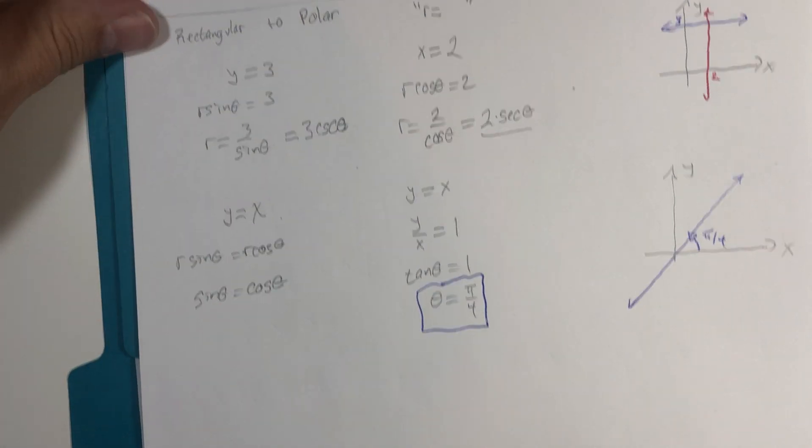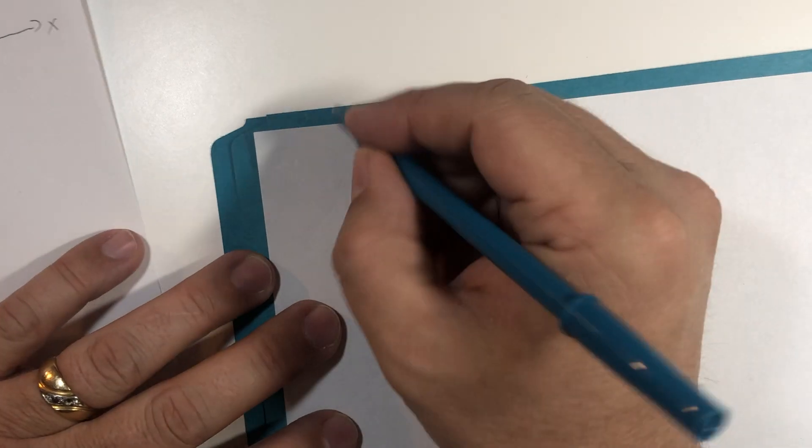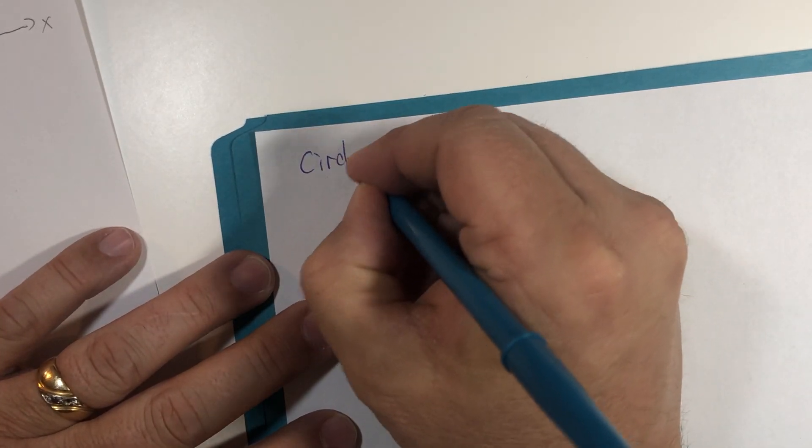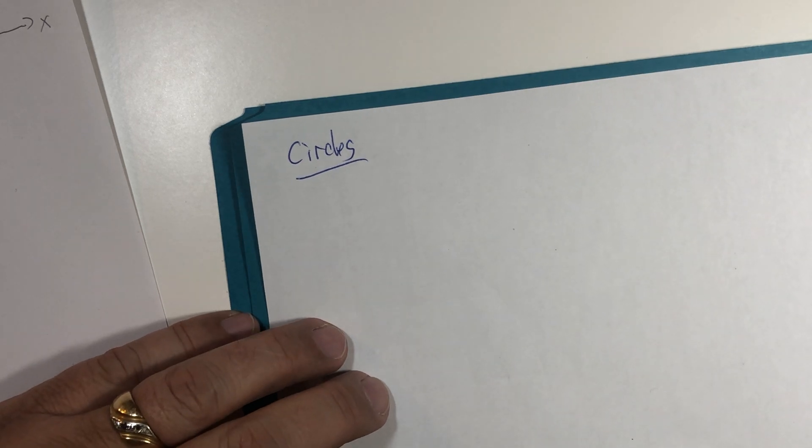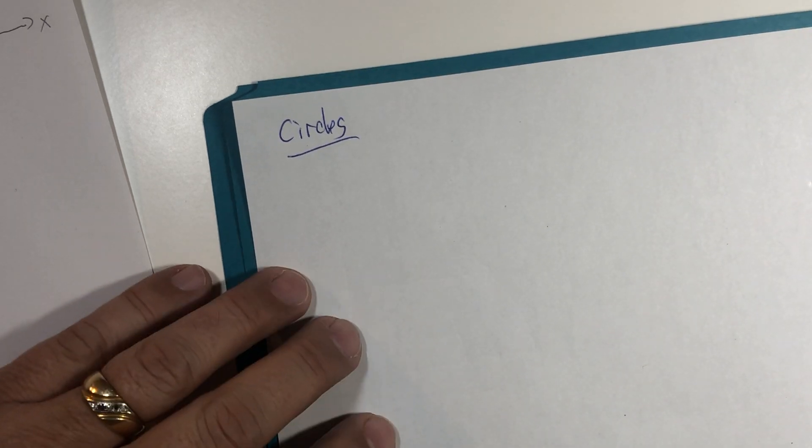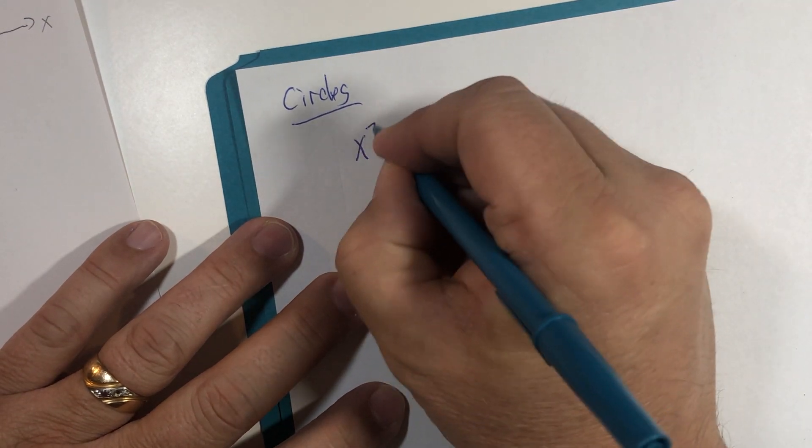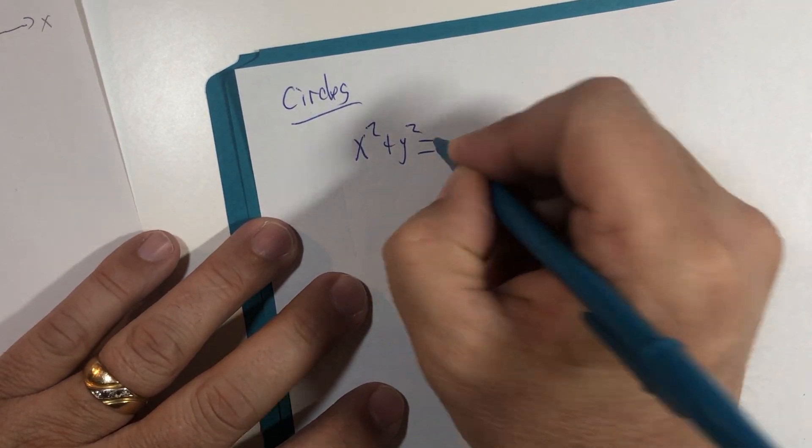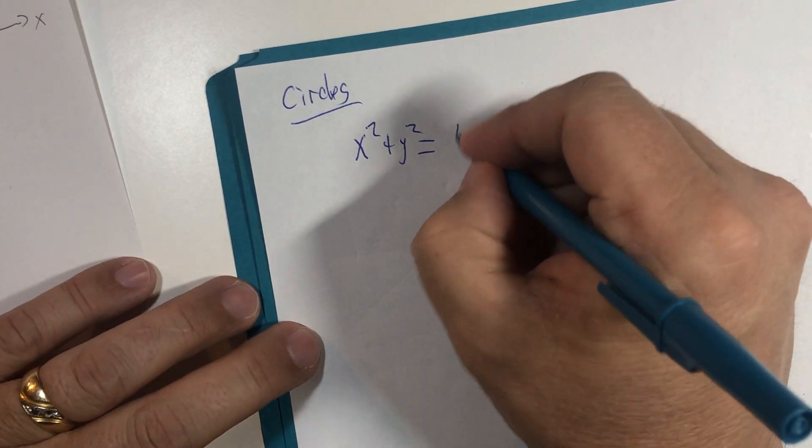Now, besides some basic lines, we're going to also look at some circles. Just two. Again, trying to keep this brief, but highlighting some of the conversions you're going to use most frequently. x squared plus y squared equals 16 maybe?